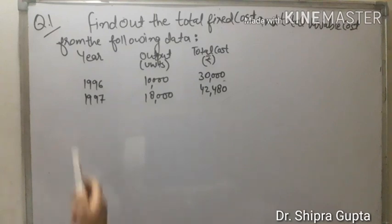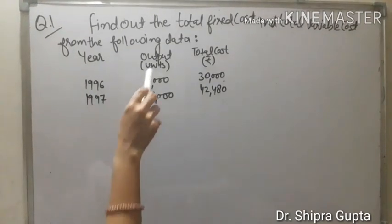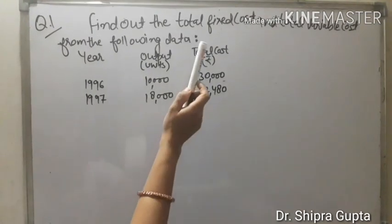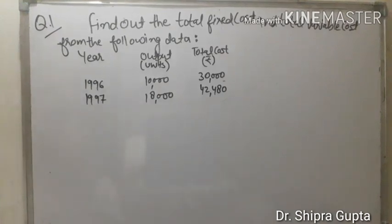In this question, two years are given, two outputs in units are given, and two total costs are given. We will calculate fixed cost and variable cost.